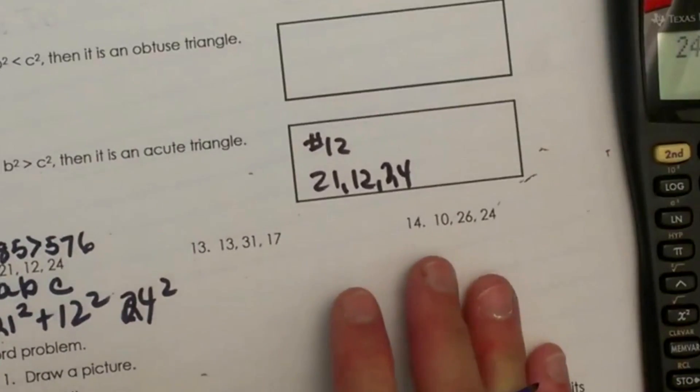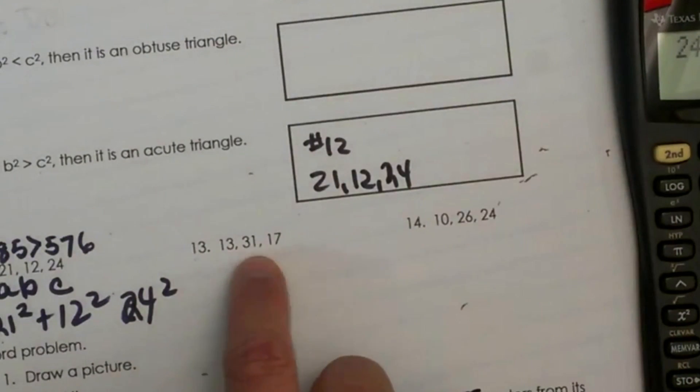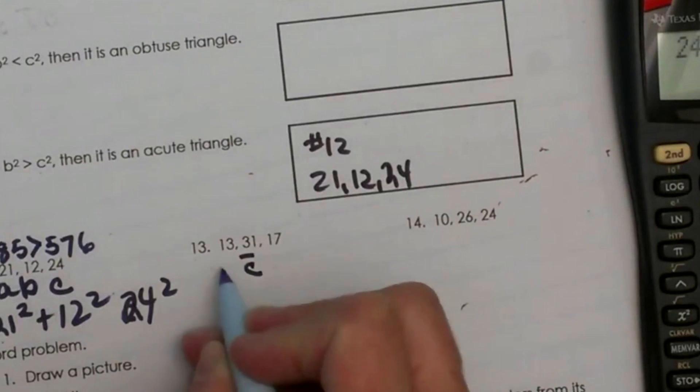Let's try the second one. We have 13, 31, and 17. Which one is C? Well, C is 31 because that is the longest side. So A and B are 13 and 17.